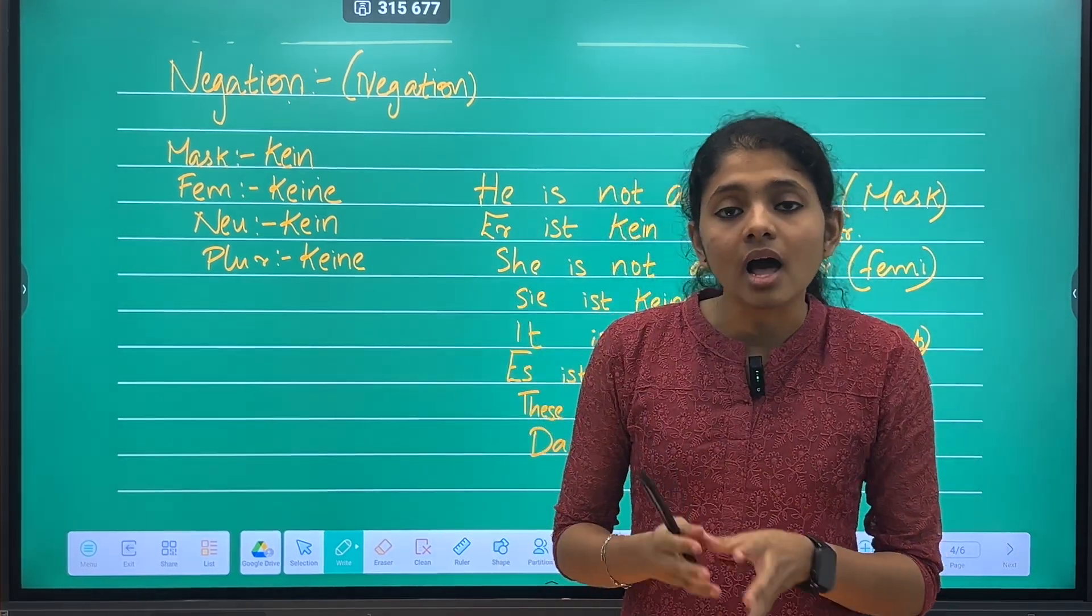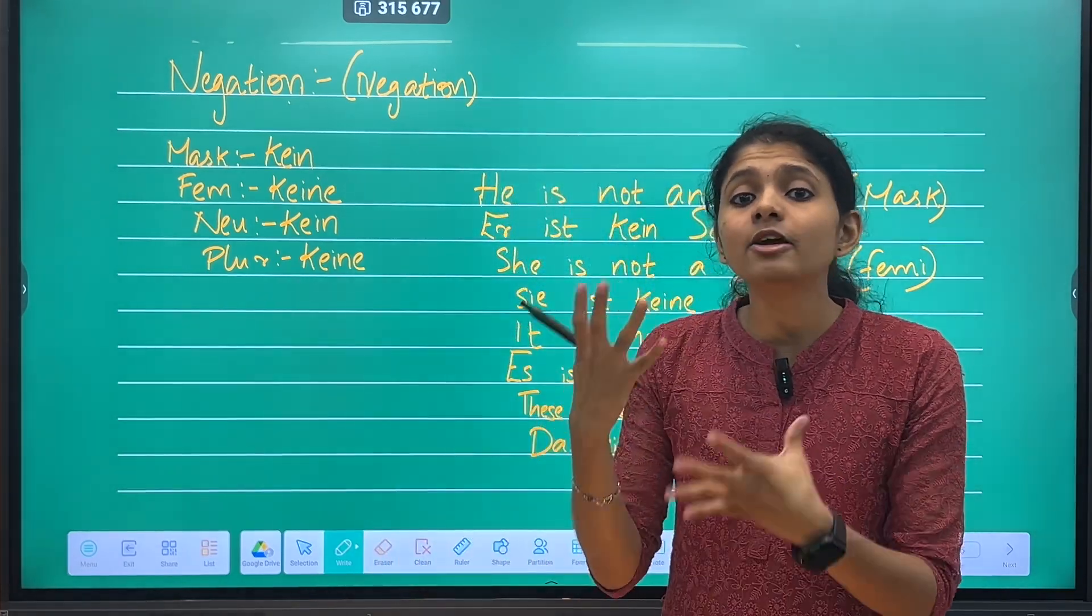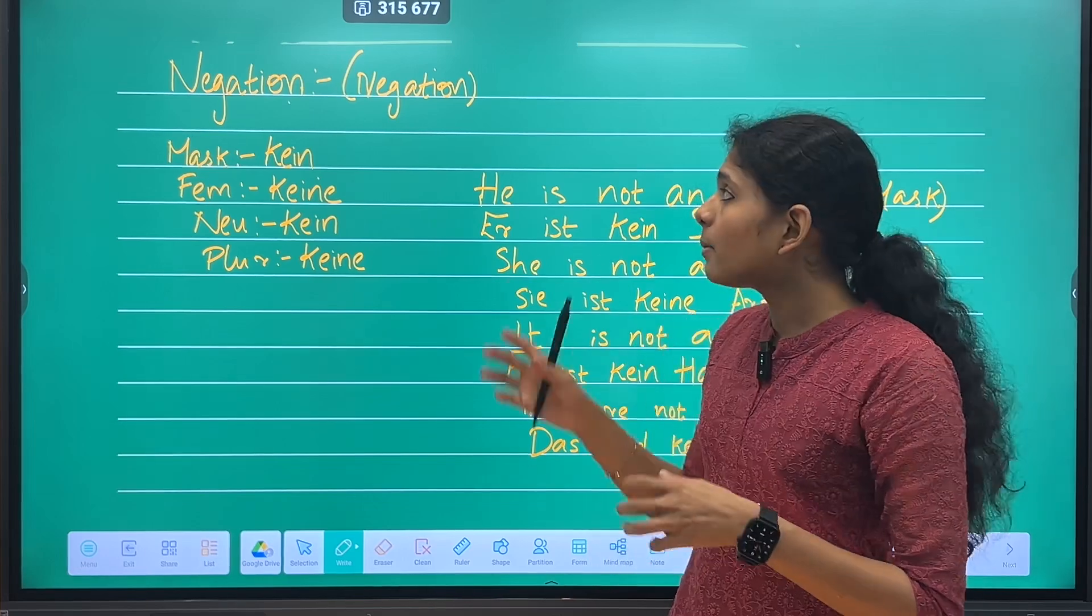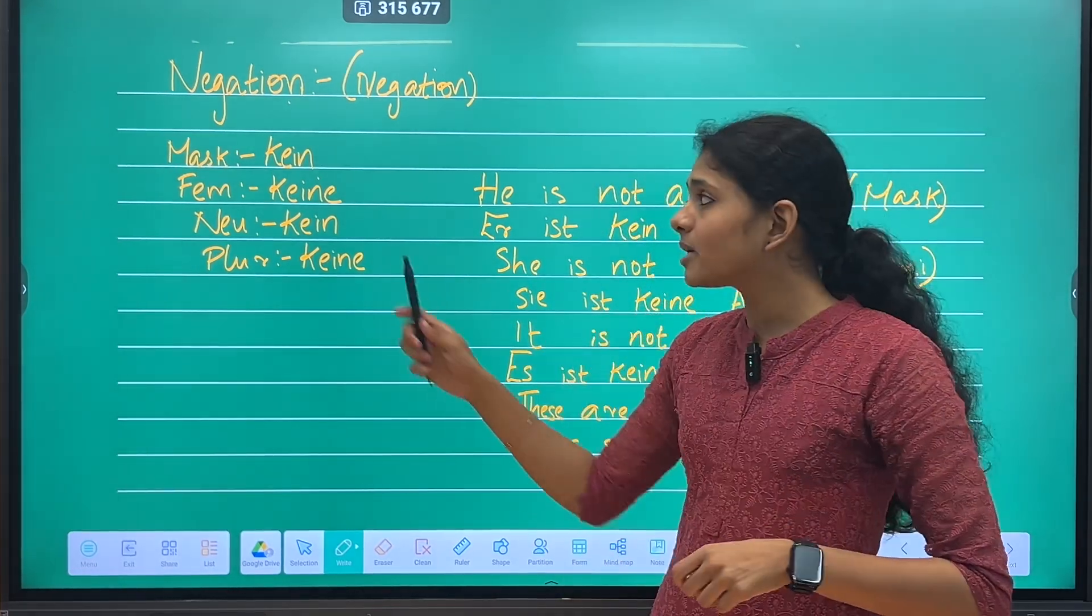If there is a doctor or actor, we will use this negation. If we use negation, we will use kein. He will use kein.